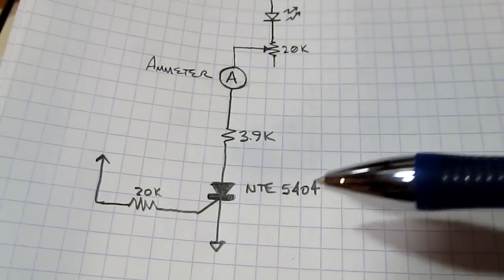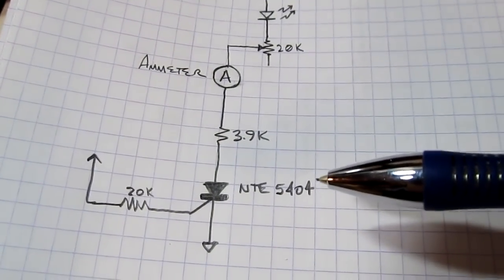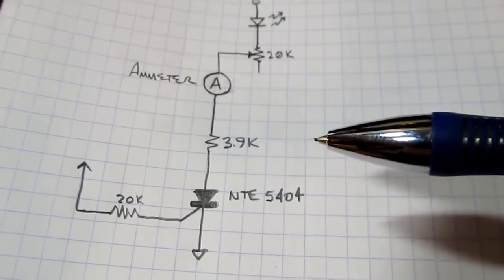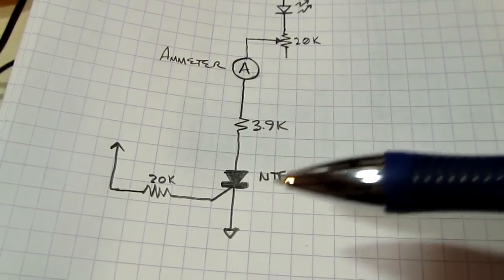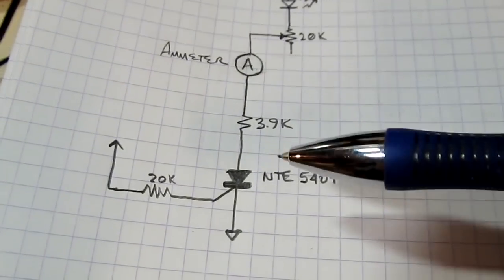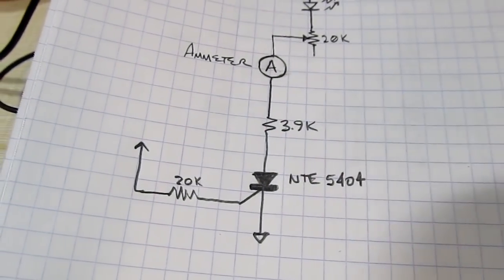And the SCR. This is an NTE5404, which is a very, what they call a sensitive gate SCR designed for low-level circuits, or low-level voltages and things like that, and works well for this breadboard demonstration.